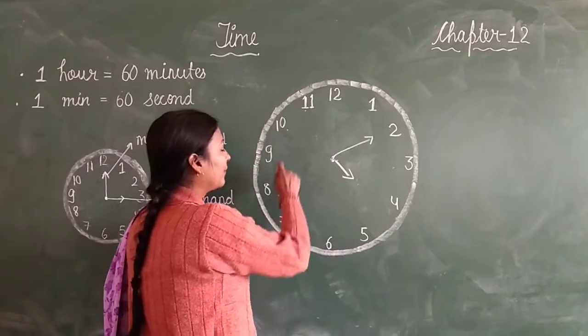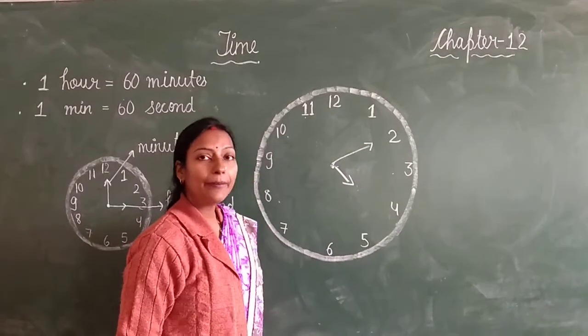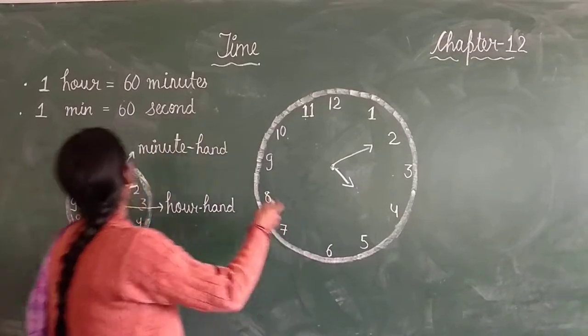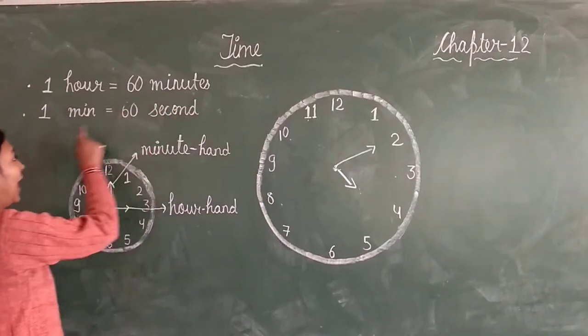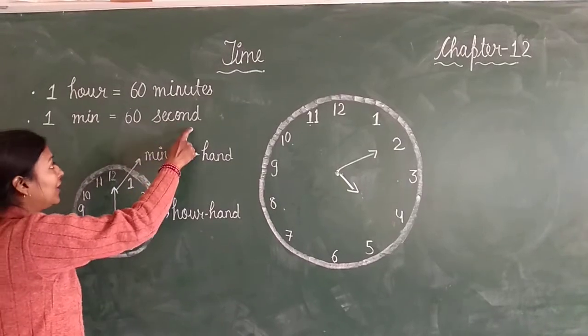1 hour is equal to 60 minutes and 1 minute is equal to 60 seconds.